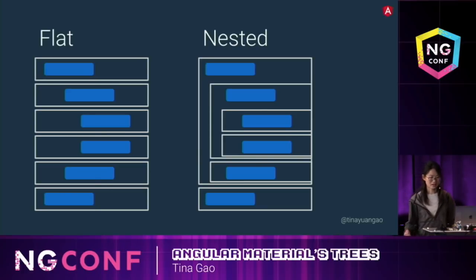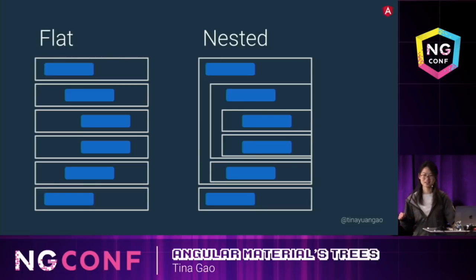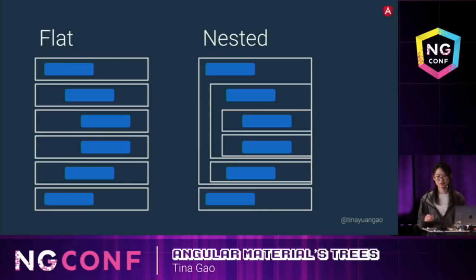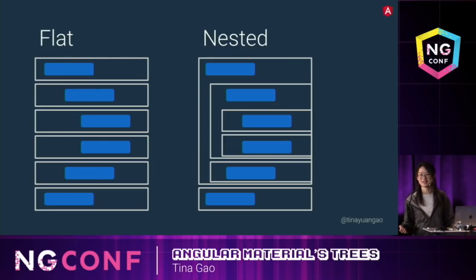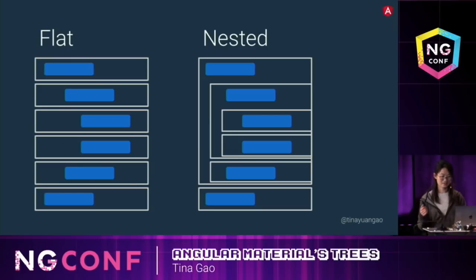So a node's children are nested inside the node. We built these two types of trees because we believe you may have different requirements and different use cases, and you can choose the one that fits your need.